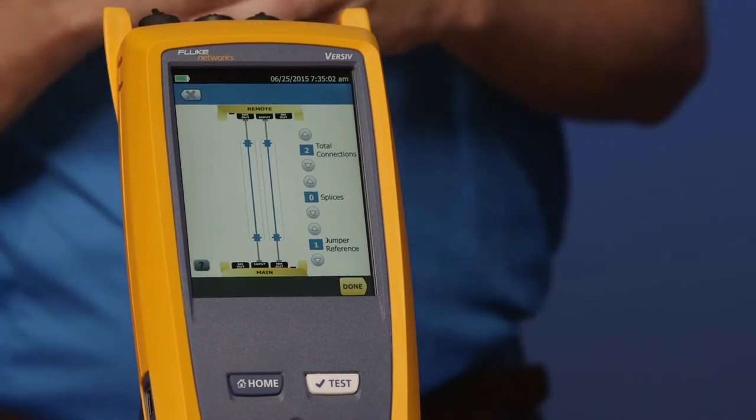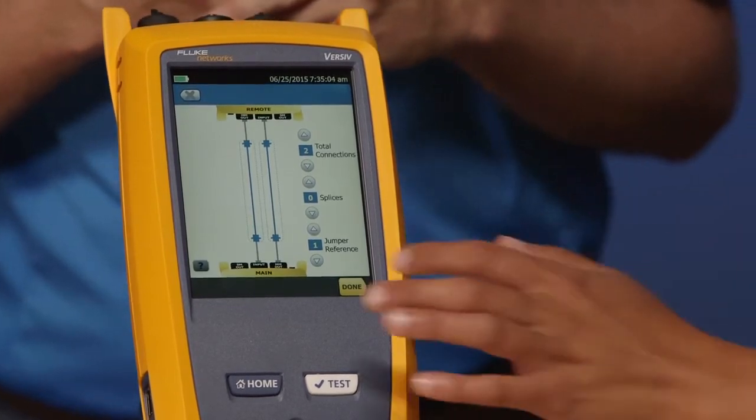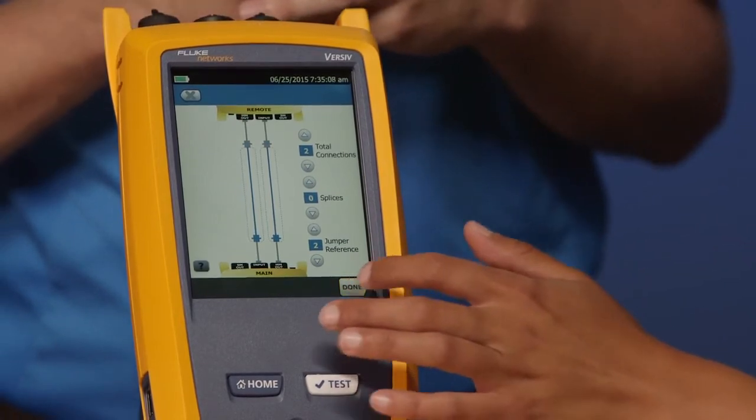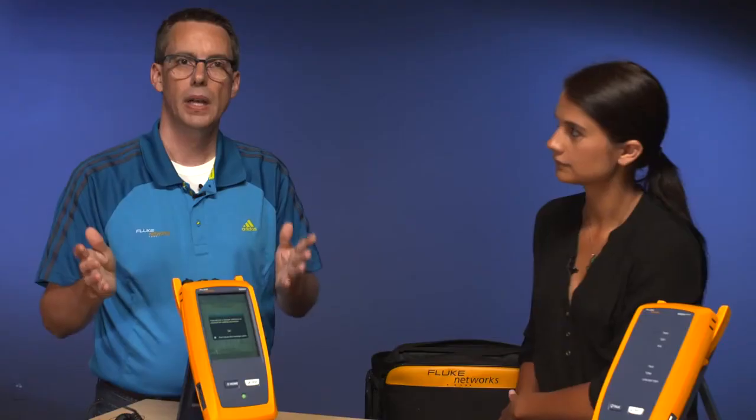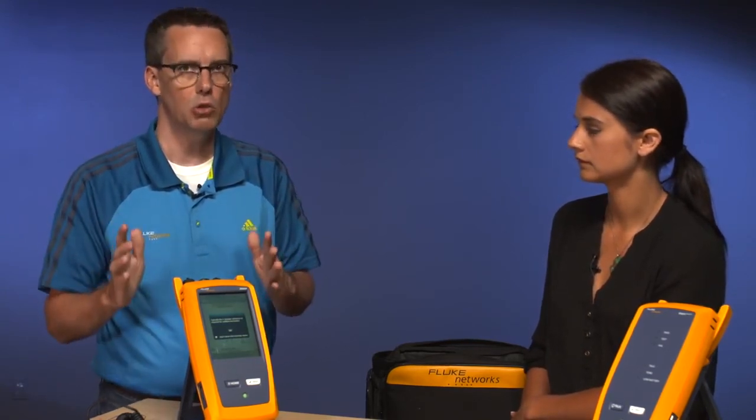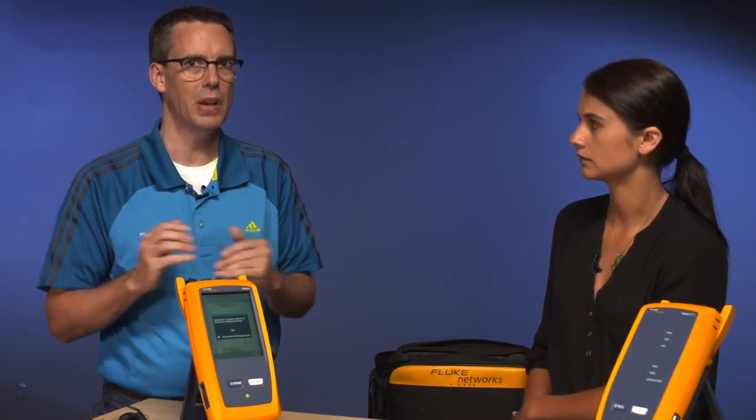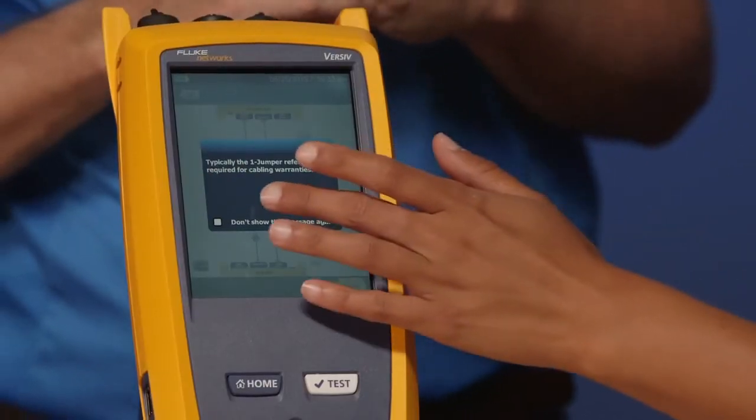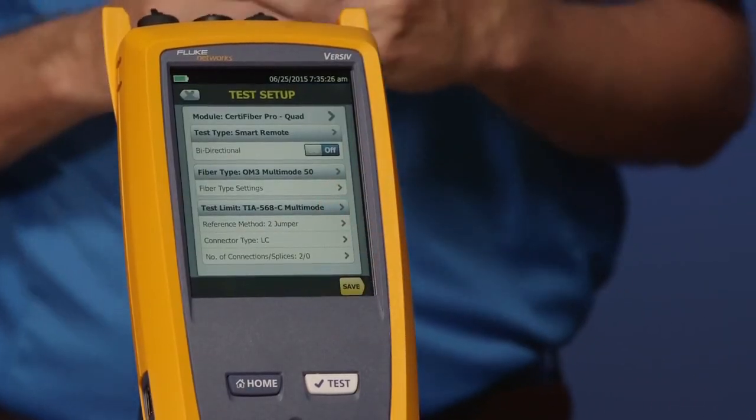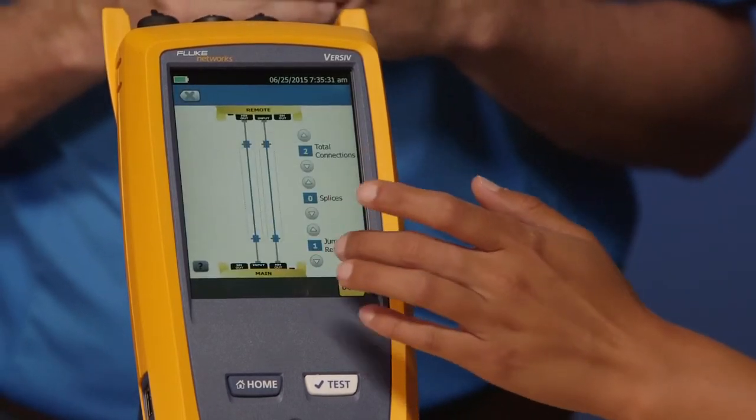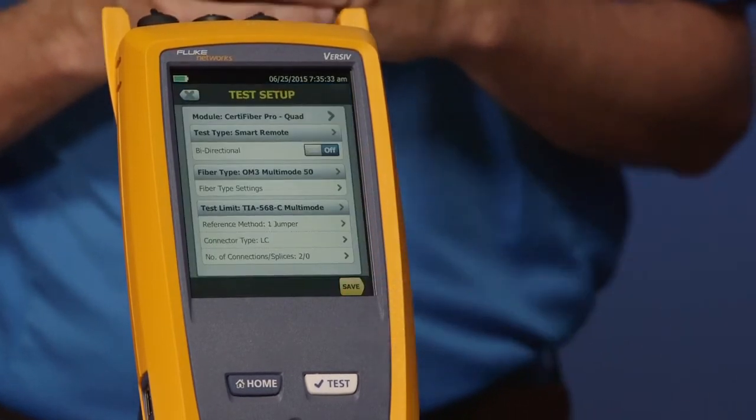Amanda, go ahead and change the jumper reference to two for me. Let's see what happens. And tap save. Oh, we got a warning. Absolutely. Because doing the one jumper reference is so critical, we're going to give you a warning that says, are you sure you want to do a two jumper reference? Because this may invalidate your cabling warranty application. So go ahead and tap OK for me. And we'll change it back to one. So go ahead and change it back to one for me.